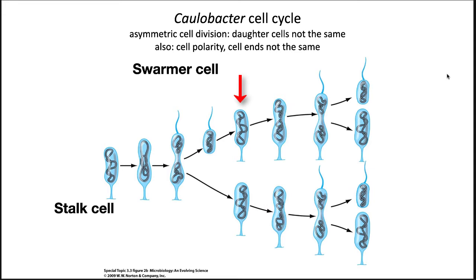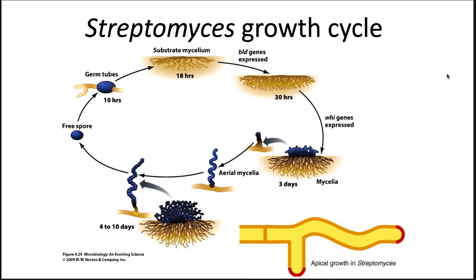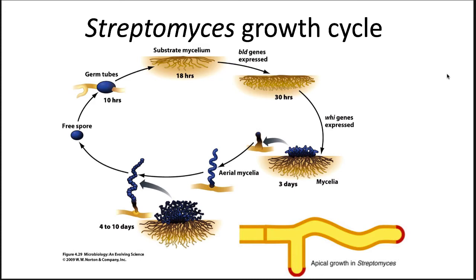Streptomyces species have a filamentous mode of growth. After a spore lands on a suitable medium for growth, it will germinate. The vegetative cell expands, forming long tubes, much like fungi. These mycelia will grow out into the medium, and most of the growth is occurring at the tips of the mycelia. After a period of growth, aerial mycelia will begin to form and eventually divide into spores. These will disperse into the environment, completing the cycle.